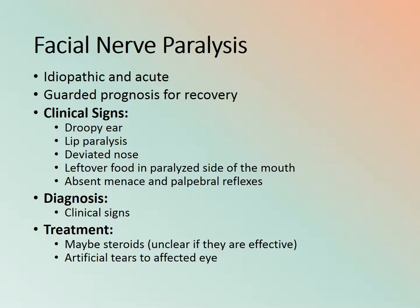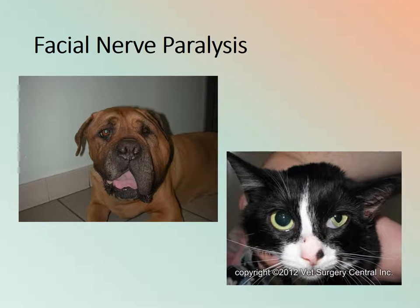Facial nerve paralysis: the paralysis of the facial nerves is often idiopathic and comes out of absolutely nowhere, with a very guarded prognosis for recovery. The animal will have a droopy ear, paralyzed lips, a deviated nose drooping on one side, leftover food in the mouth, and absent menace and palpebral reflexes. Diagnosis is by clinical signs. Treatment may include steroids, though effectiveness is uncertain, and artificial tears for the affected eye since tear production is decreased or absent.